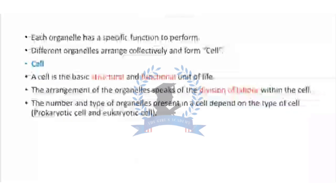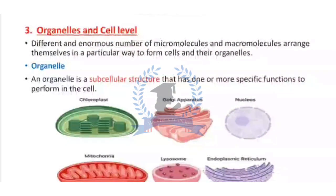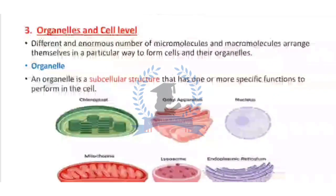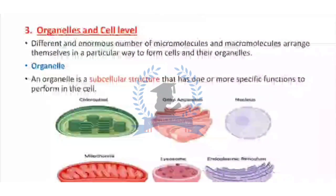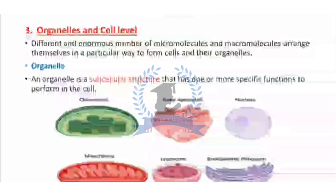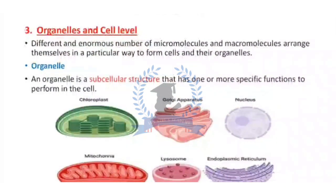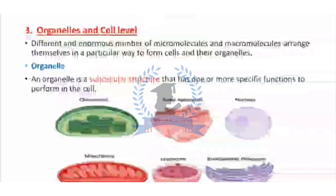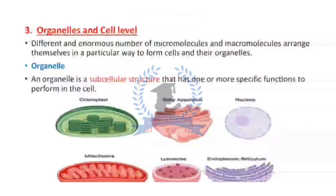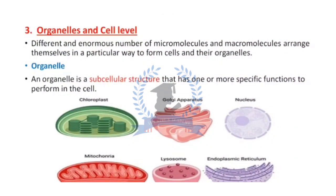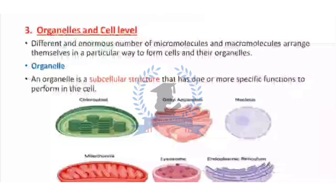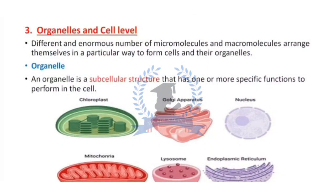The number and type of organelles present in a cell depends on the type of cell, whether prokaryotic or eukaryotic cell. These organelles are not present in each cell or in each organism. The number of organelles depends on the type of cell. For example, if there is a human cell, then mitochondria will be more.